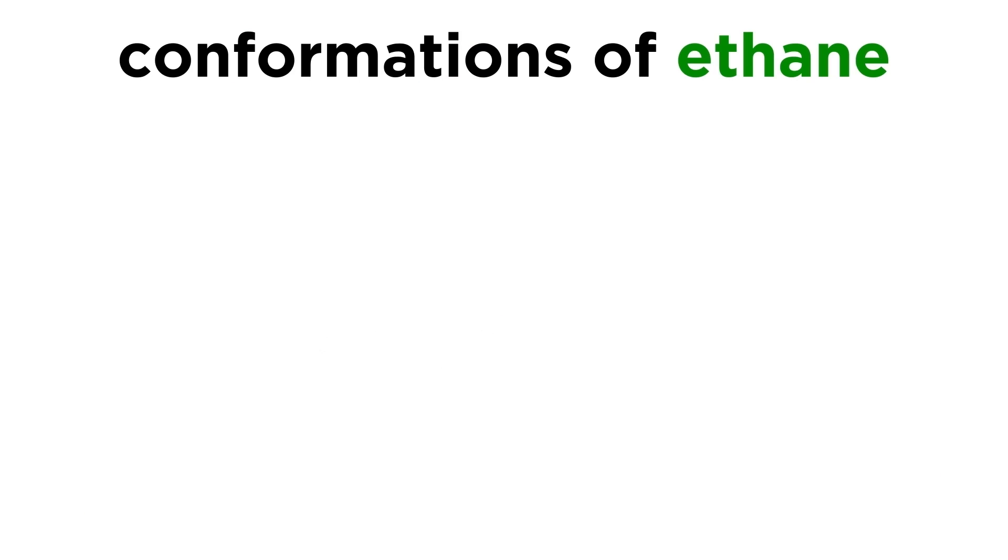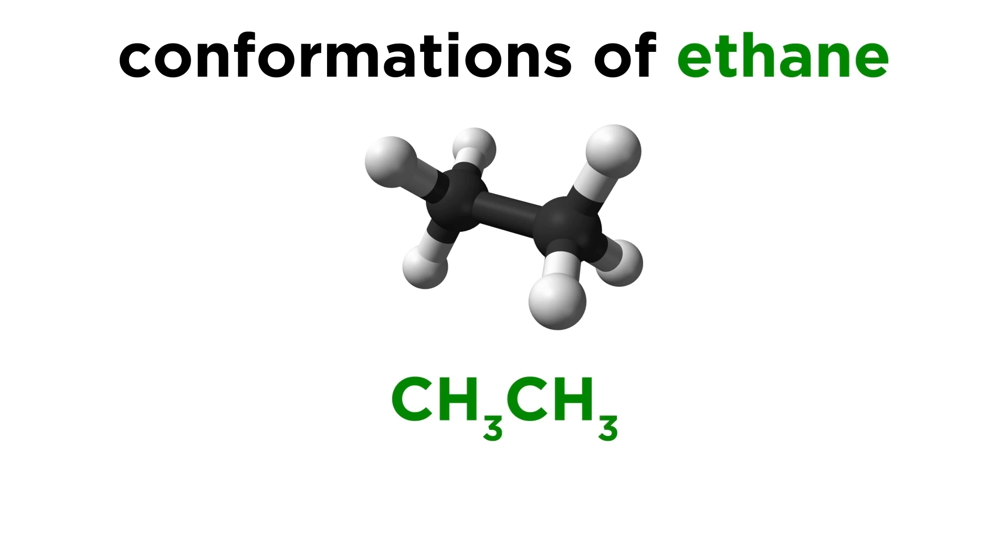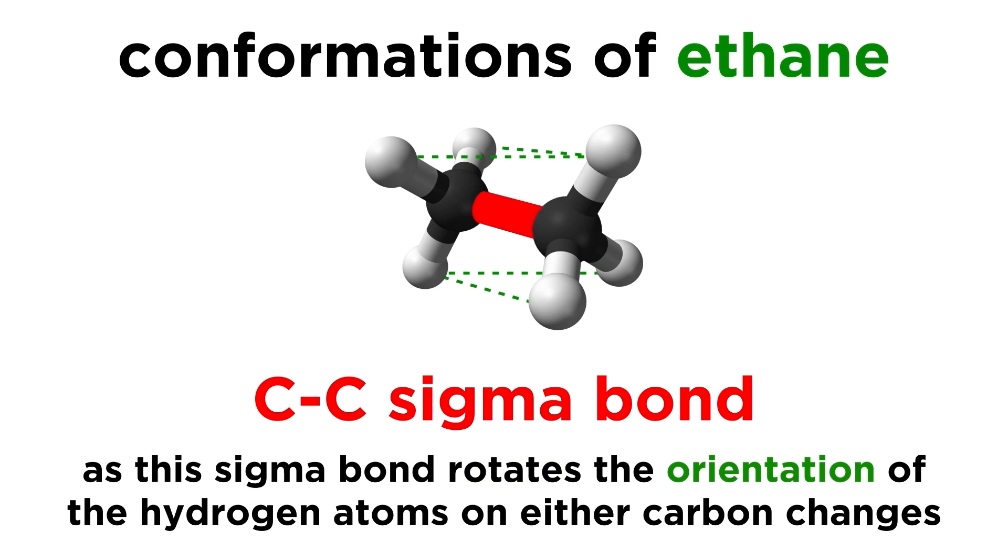Let's start by looking at a simple molecule of ethane so that we can introduce some basic concepts regarding conformational analysis. Take a look at this molecule of ethane, CH3CH3. We have a sigma bond between the carbons, and as this rotates, the orientation of these hydrogen atoms with respect to the hydrogen atoms on the other carbon will change.